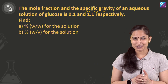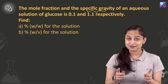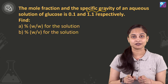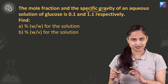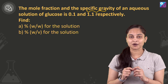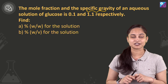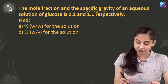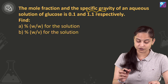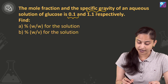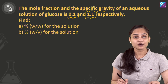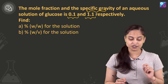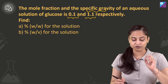Hi, dear chums. As promised, I said I'll be talking about this particular question on the coming weekend. This question belongs to chapter number 1, some basic concepts of chemistry. The question is: the mole fraction and the specific gravity of an aqueous solution of glucose is 0.1 and 1.1 respectively. We need to find percentage weight by weight and percentage weight by volume for the solution.